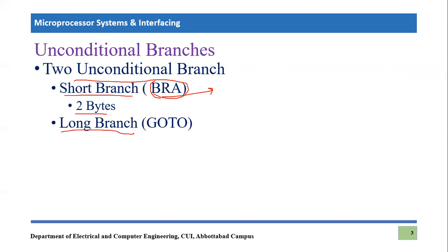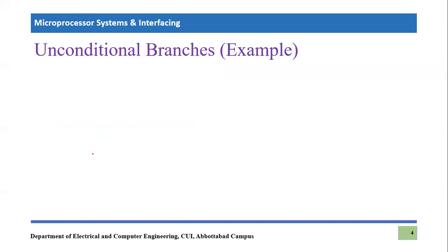The second type of unconditional branch is the long branch, whose keyword is GOTO. We will use it very infrequently in this course since we are writing small programs. GOTO is a four-byte instruction, unlike the fixed two-byte RISC format, which means it takes more time to execute. That is why we will prefer BRA over GOTO in this course.